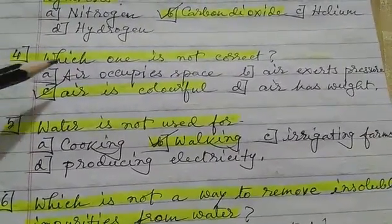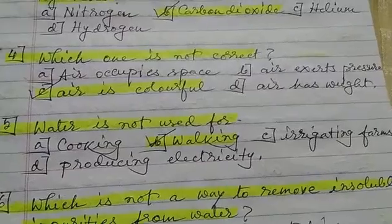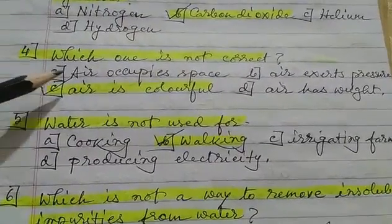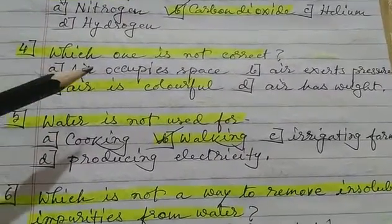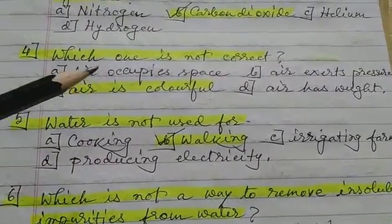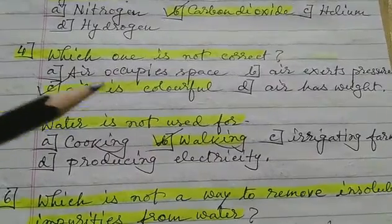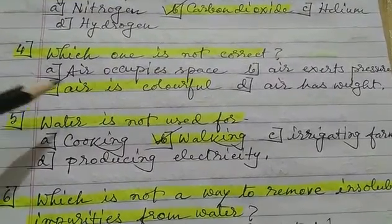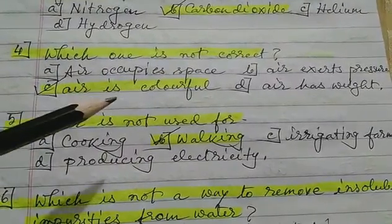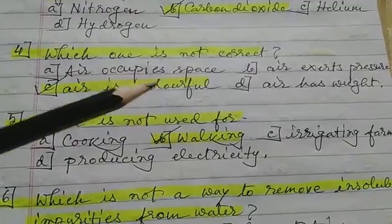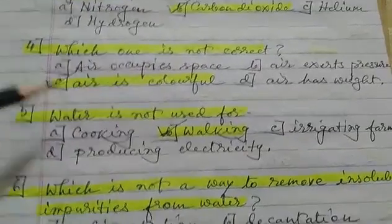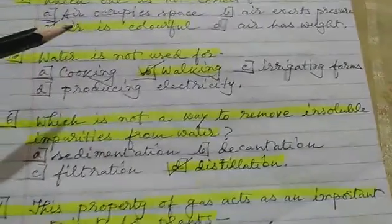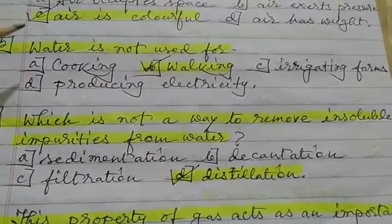Number 4: which one is not correct? A) air occupies space, B) air exerts pressure, C) air is colourful, D) air has weight. The answer is C — air is colourful, which is not correct.